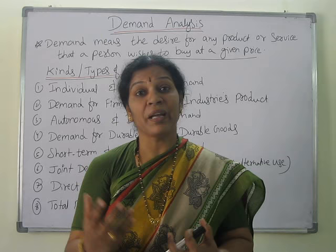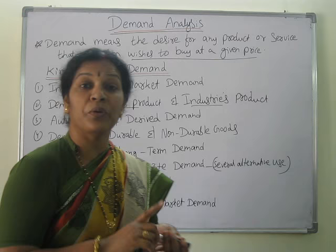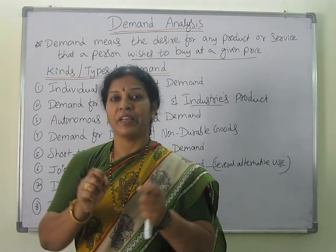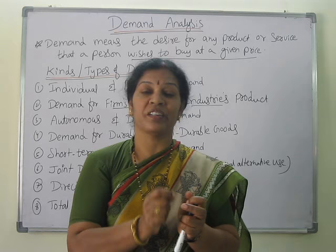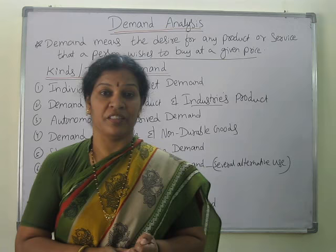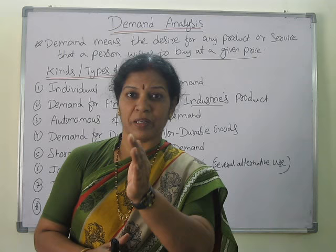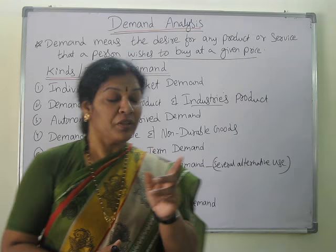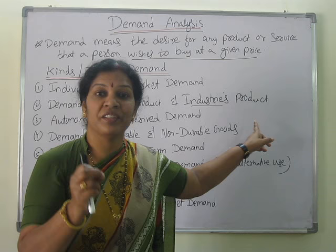The second type is demand for a firm's products and industry's products. Firm demand is the demand for only one organization or company — for example, how much demand is there for Procter and Gamble or Hindustan Lever Limited products. Industry demand is the total demand across an entire industry. For example, for steel: one company like ABC Steel Limited has its own firm demand, while total steel demand across all companies in the country is industry demand.